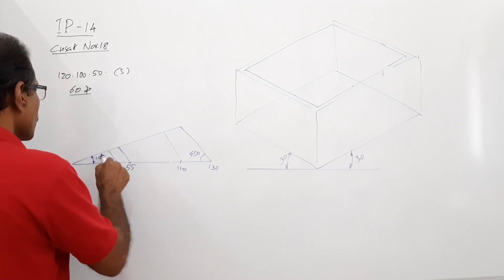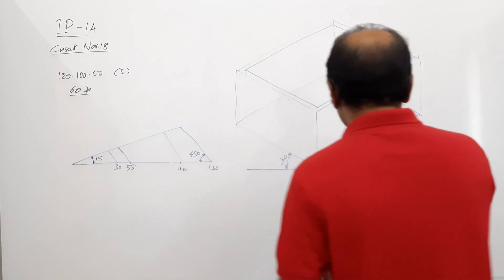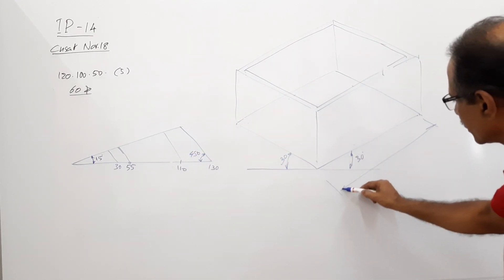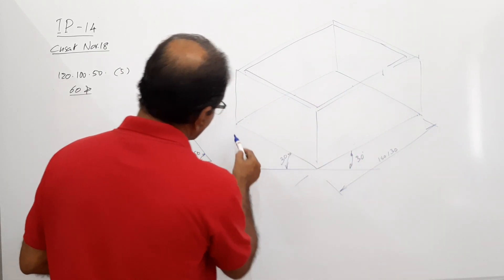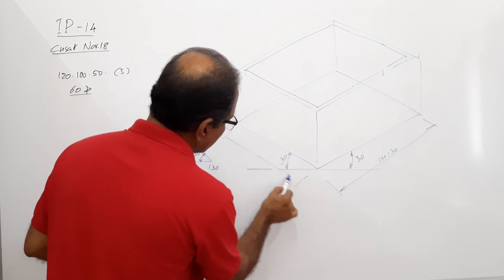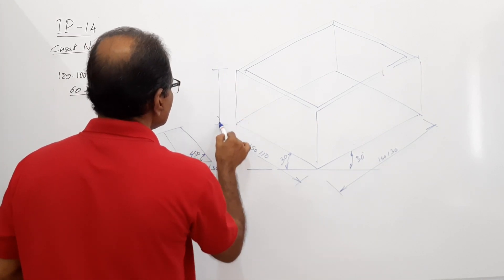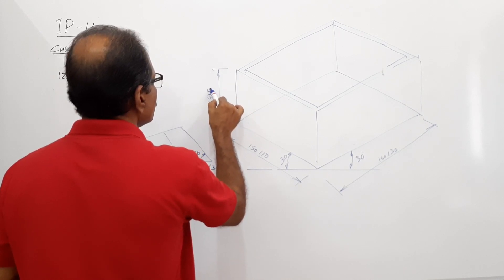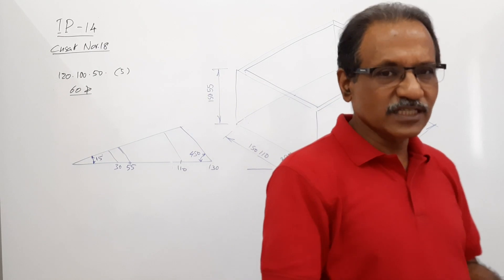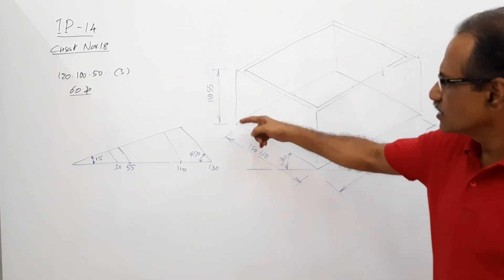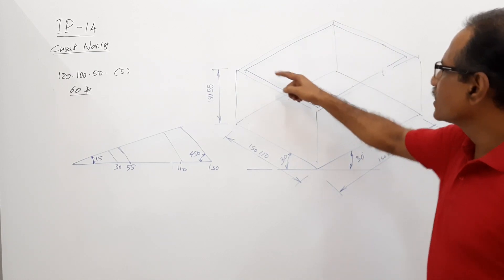I draw a parallelogram for the isometric view — iso 130 by iso 110. Then I draw the top parallelogram by going iso 55 up from all the corners. Then I reduce iso 5 everywhere and connect to get the inner edges. I have drawn only the visible edges.